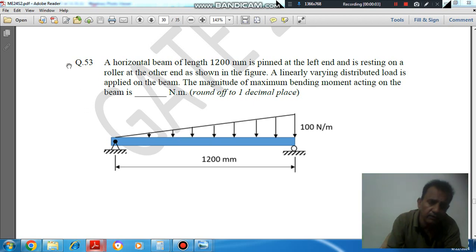Hello, welcome again. We are solving GATE 2024 Mechanical Engineering paper, question number 50. A horizontal beam of length 1200 mm is pinned at the left end and is resting on a roller at the other end as shown in the figure. A linearly varying distributed load is applied on the beam.